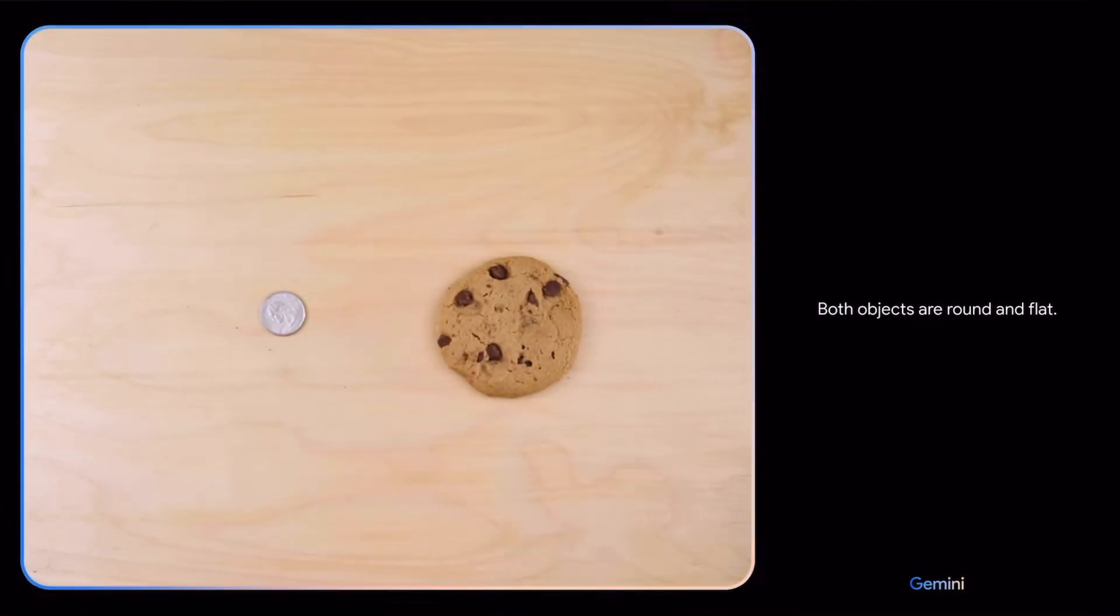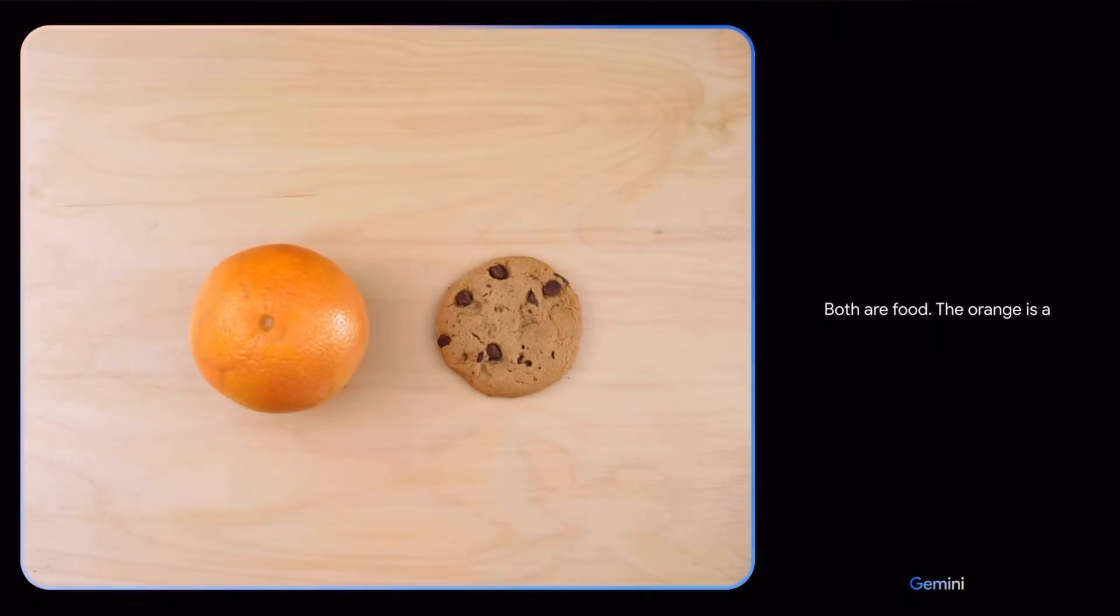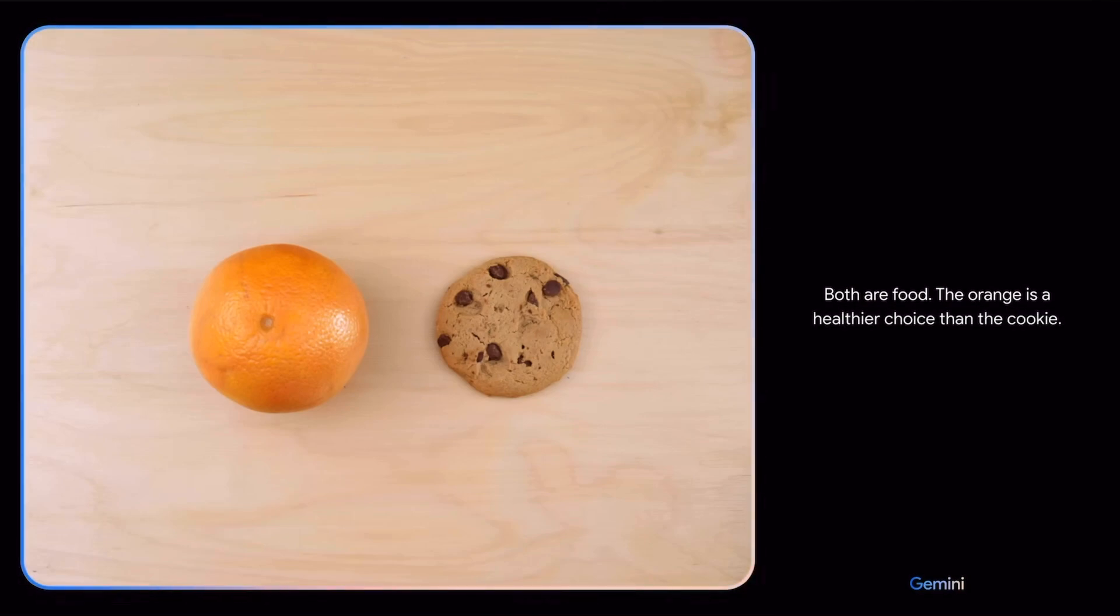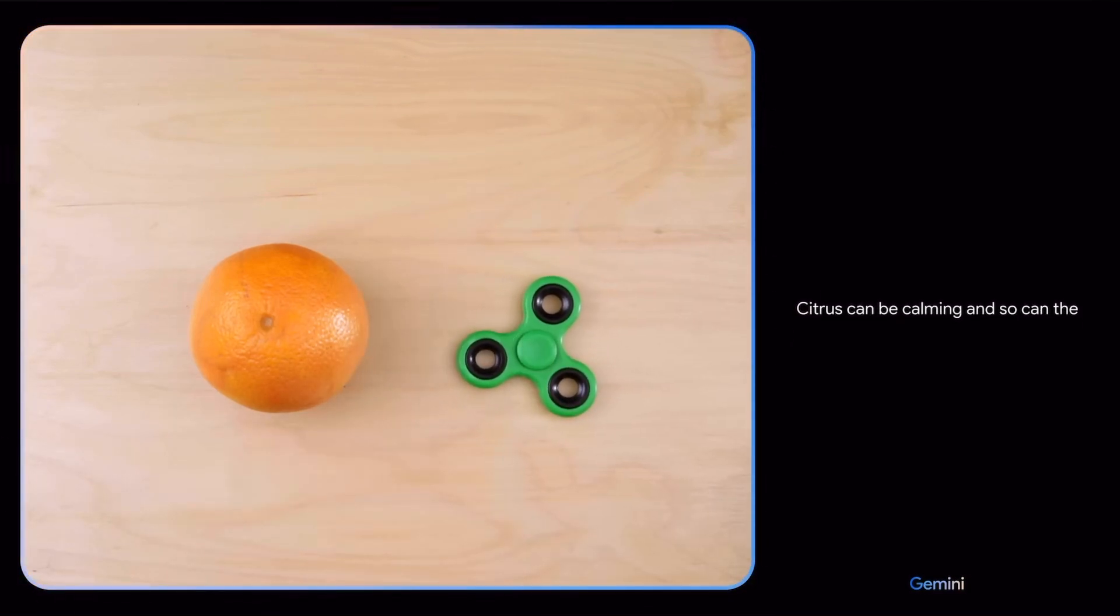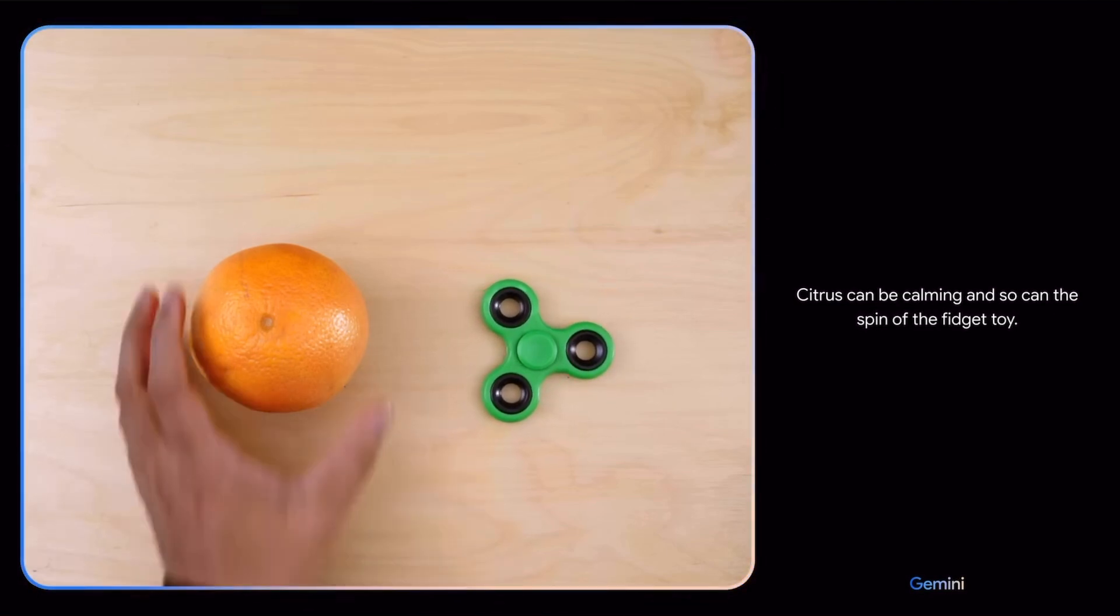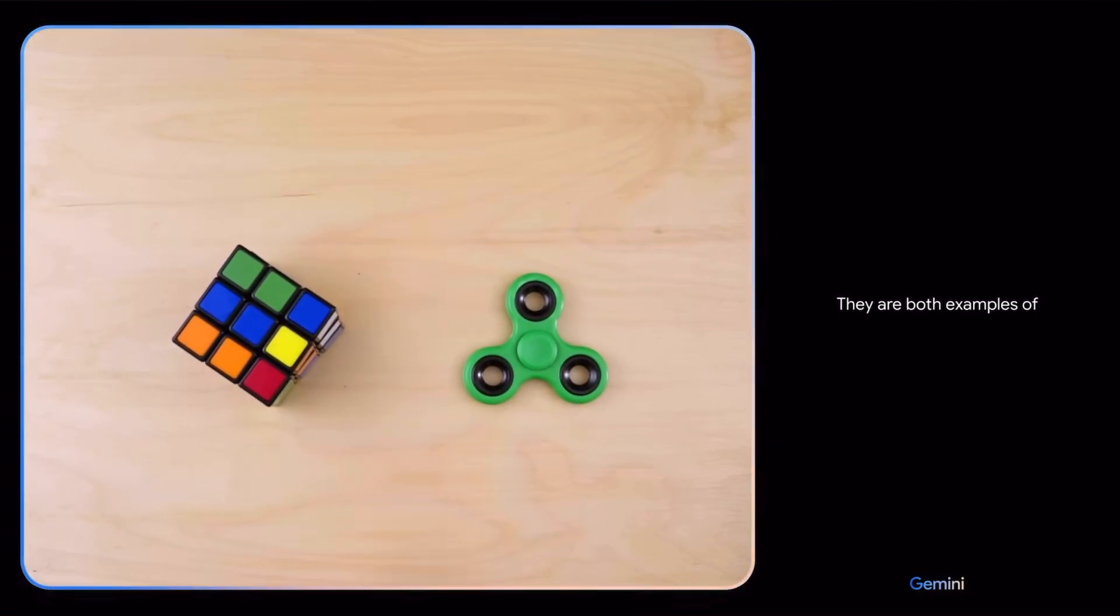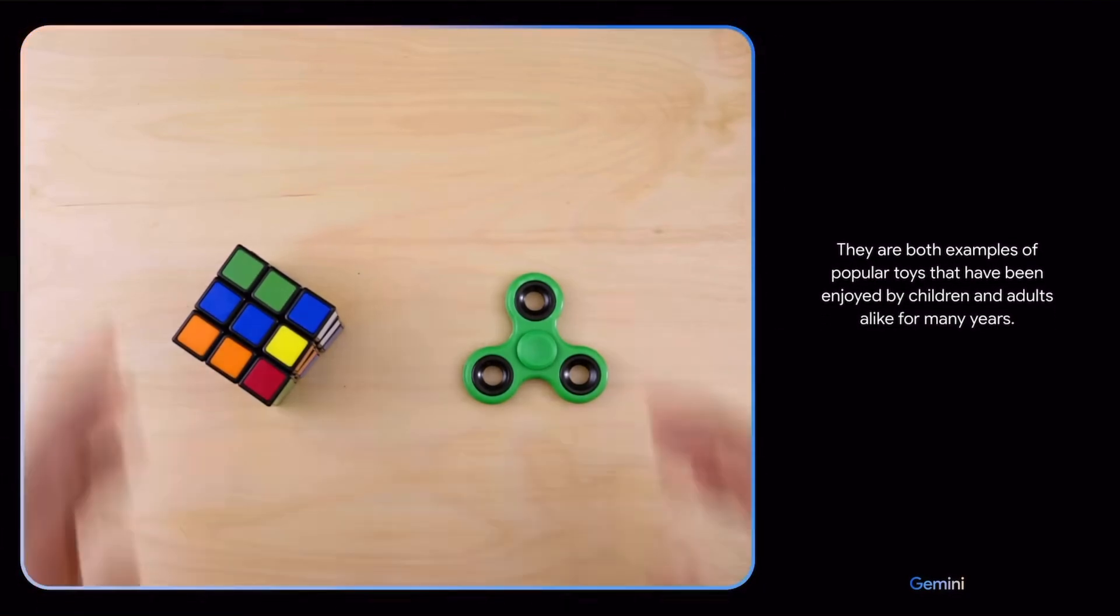Both objects are round and flat. There you go. Both are food. The orange is a healthier choice than the cookie. Citrus can be calming and so can the spin of the fidget toy. They are both examples of popular toys that have been enjoyed by children and adults alike for many years.